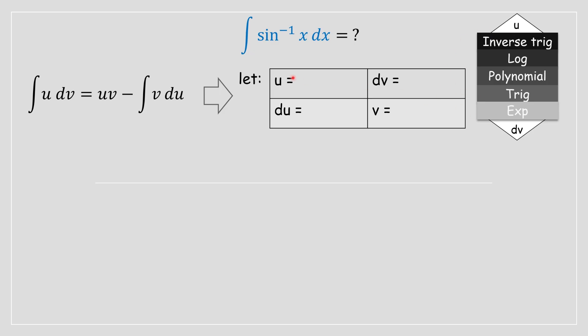So according to this chart, I'm going to select arcsine of x to be our u variable and our dv variable is just going to be 1 dx.